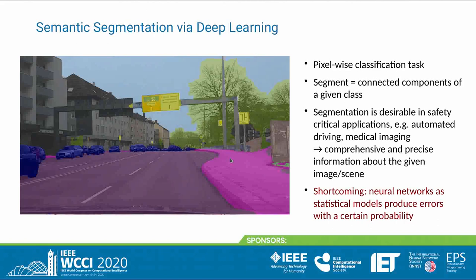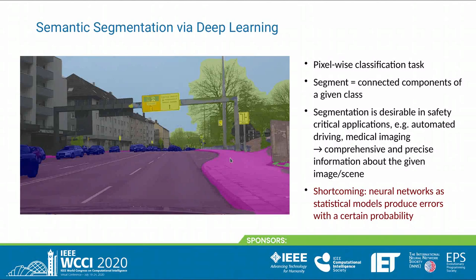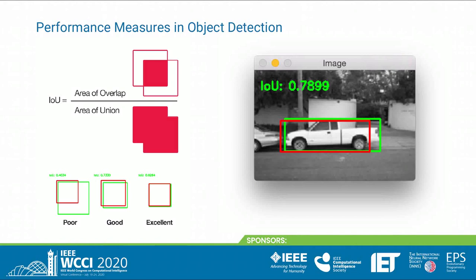Semantic segmentation is desirable in safety-critical applications such as automated driving or medical imaging, as it gives a comprehensive and precise understanding of the scenery. However, when predicting with neural networks we face the usual problems of statistical models: we produce errors with a certain probability, and in safety-critical applications like automated driving it is absolutely necessary to understand these errors.